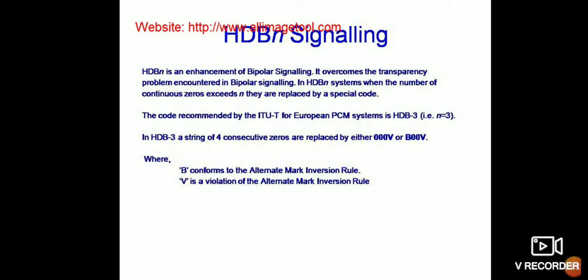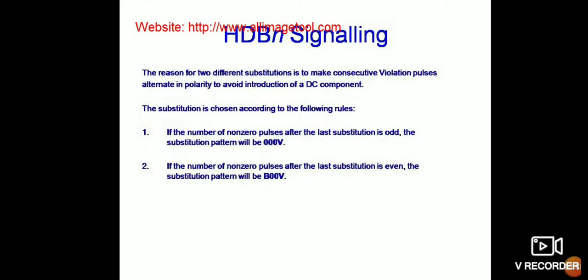In HDB3, a string of four consecutive zeros is replaced by either 000V or B00V, where B conforms to the Alternate Mark Inversion rule and V is a violation of the Alternate Mark Inversion rule. The reason for two different substitutions is to make consecutive violation pulses alternate in polarity to avoid introduction of a DC component. The substitution is chosen according to specific rules.